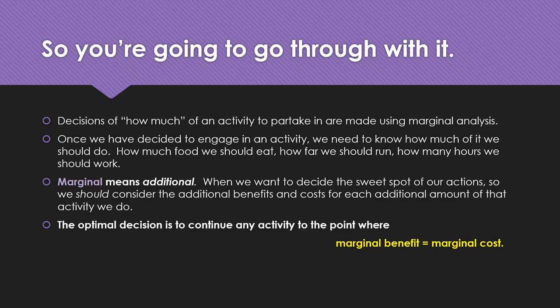The key concept in this course is that the optimal decision is to continue any activity to the point where marginal benefit equals marginal cost. Marginal benefit is the additional benefit you receive for consuming or producing one more unit — running one more mile, eating one more slice of pizza, making one more unit of your good or service — and that has to equal the additional cost. Any amount consumed or produced beyond that point siphons off overall satisfaction or profits, because the additional cost outweighs the additional benefit. And if you stop before this point, you're missing out on potential profits or satisfaction.